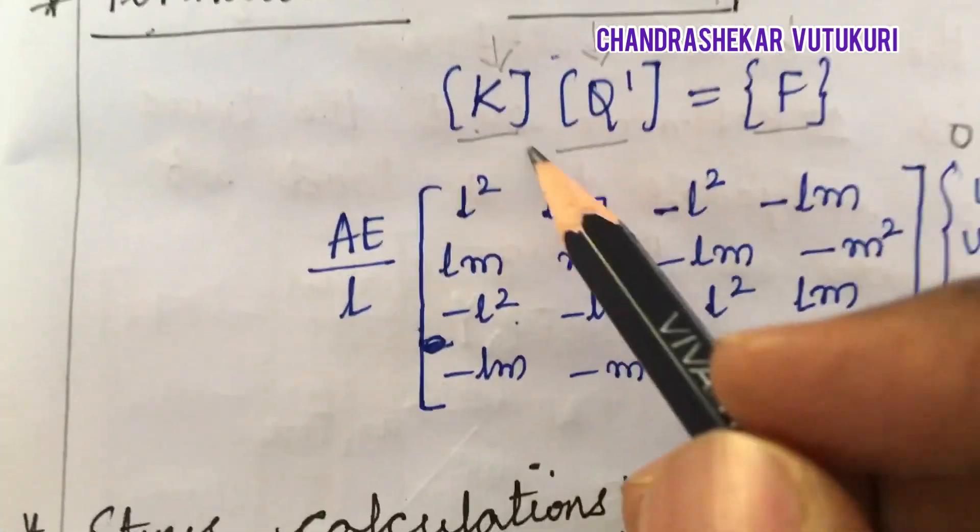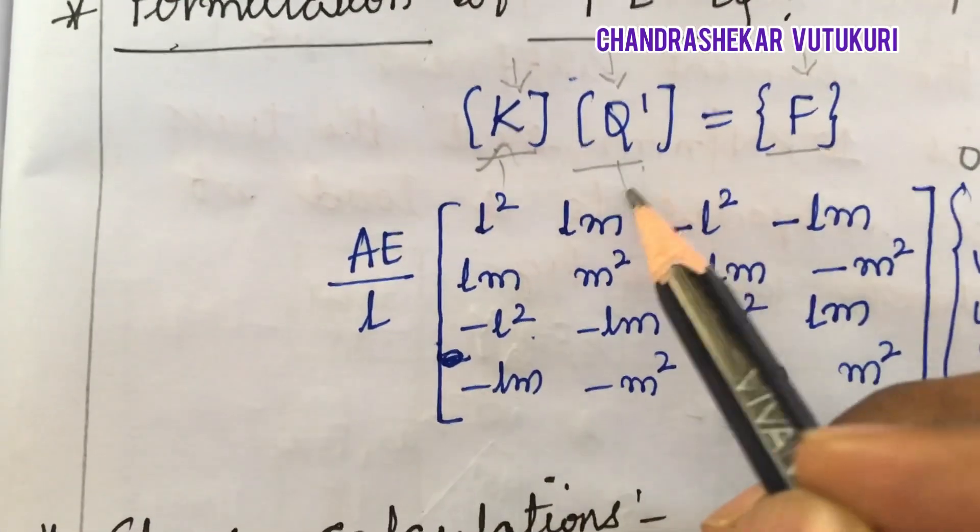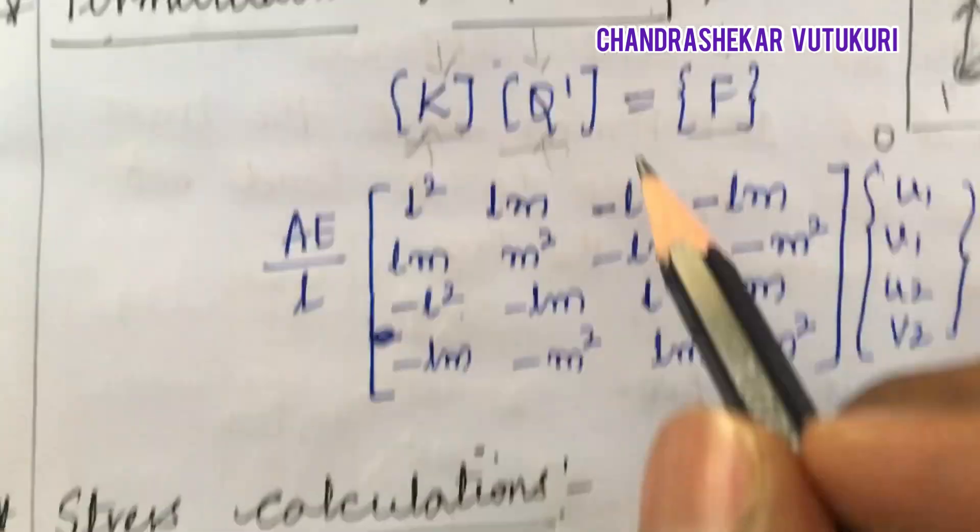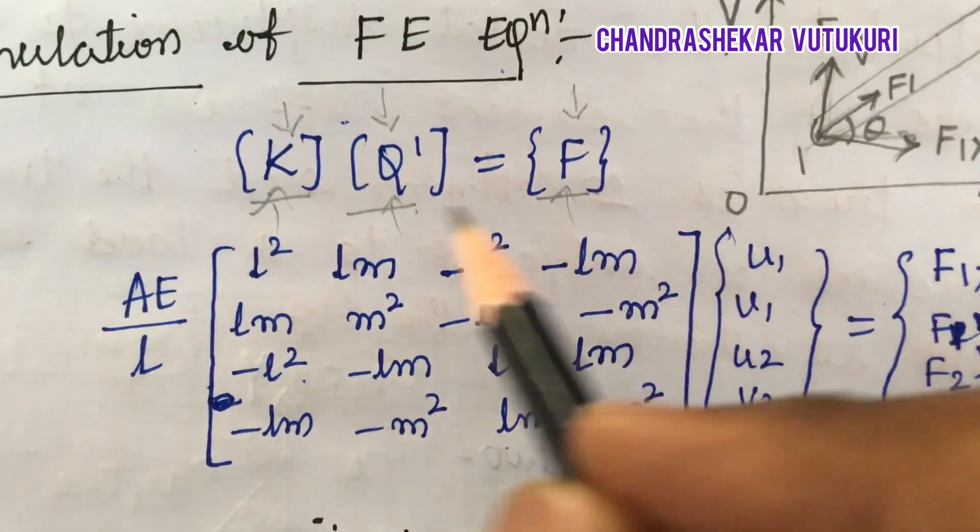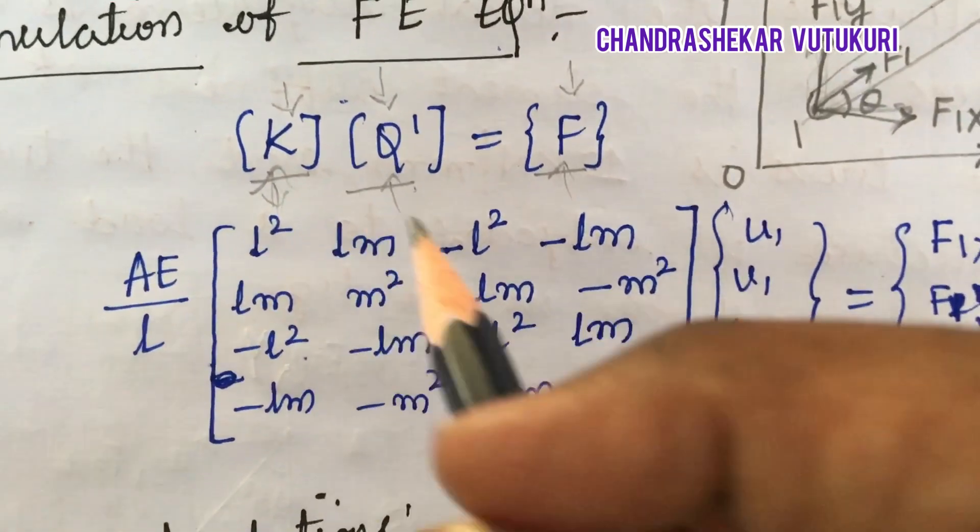So this is very easy. KQ equal to F - K is the stiffness matrix, Q is the displacement matrix or the displacement function and F is the load vector. K matrix already derived from last video.